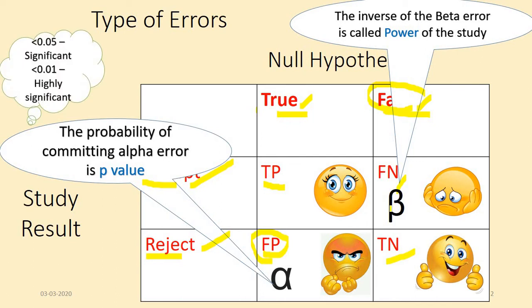But conventionally, people have kept it as 0.05. When the p-value is less than 0.05, you call it statistically significant. When the p-value is less than 0.01, then you call it highly significant.